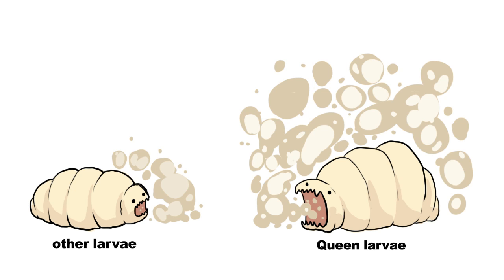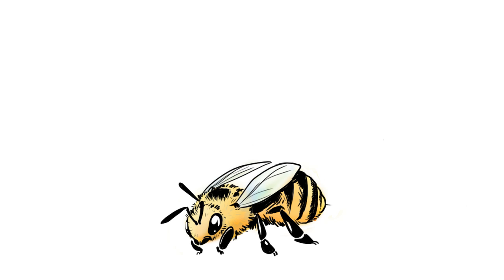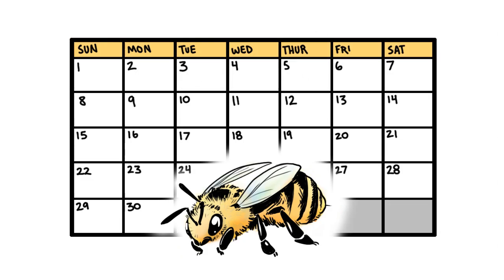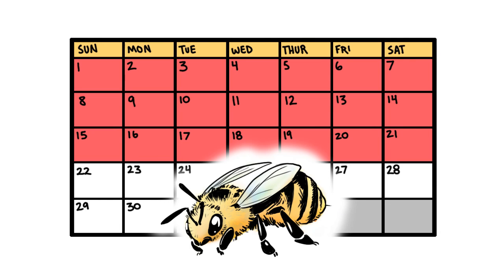A queen larvae will consume 15 to 20 times more jelly than the other larvae. The worker bee makes this decision to create queens when their hive has too many workers and they need to swarm to a new hive with the old queen. It takes about 21 days for an egg to grow into a full bee.